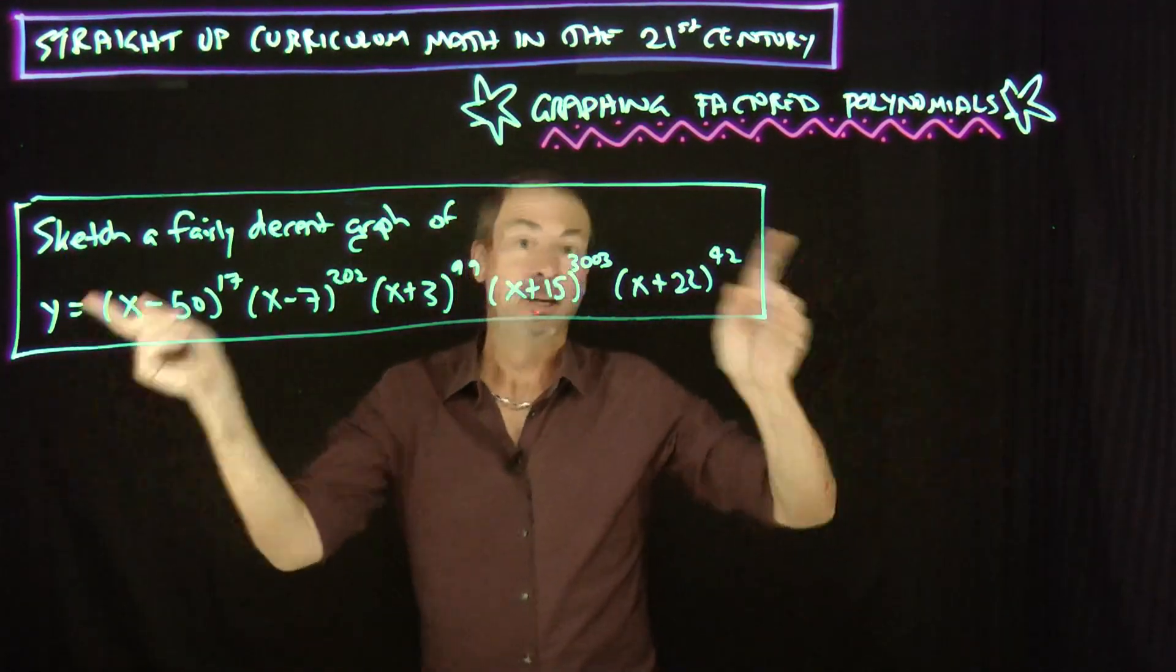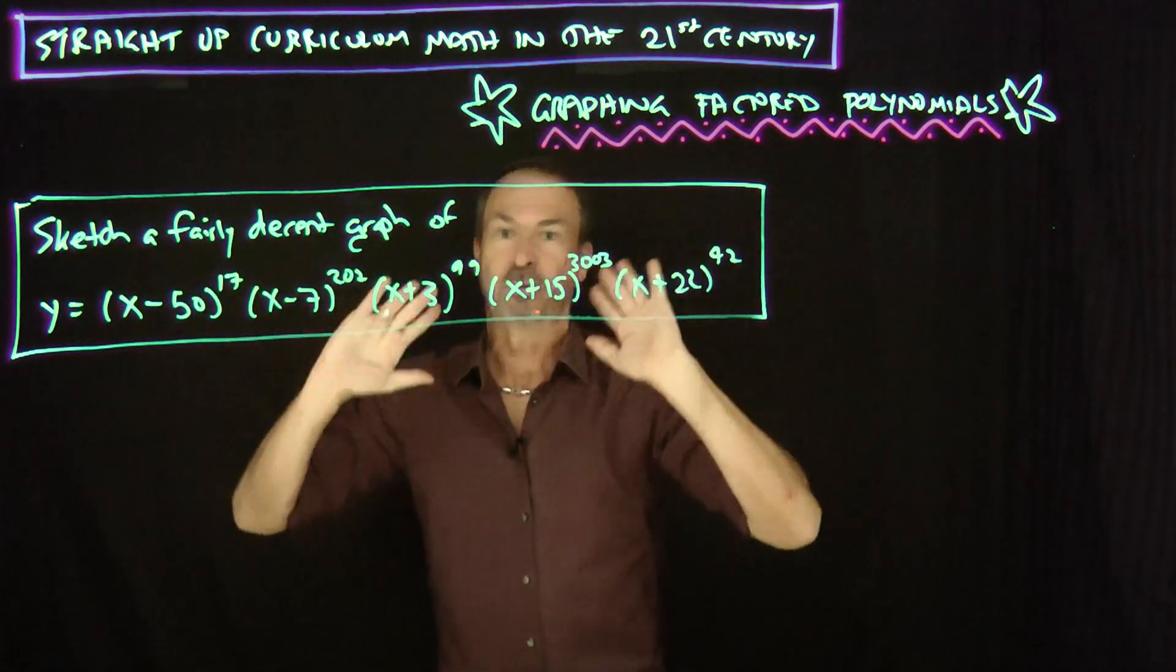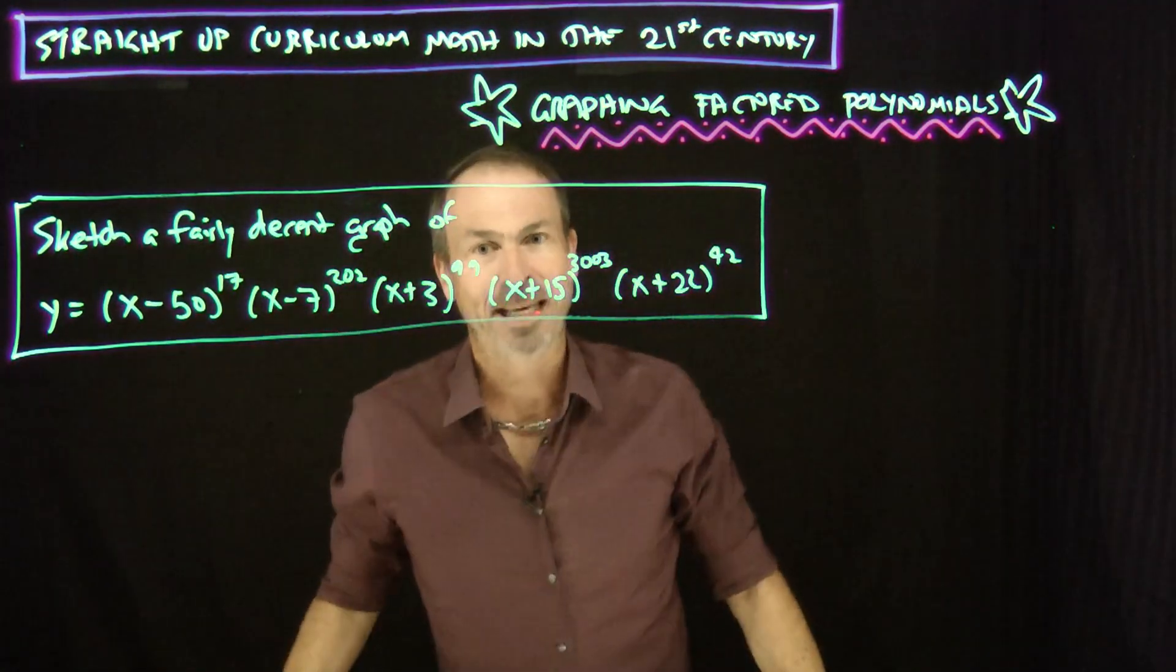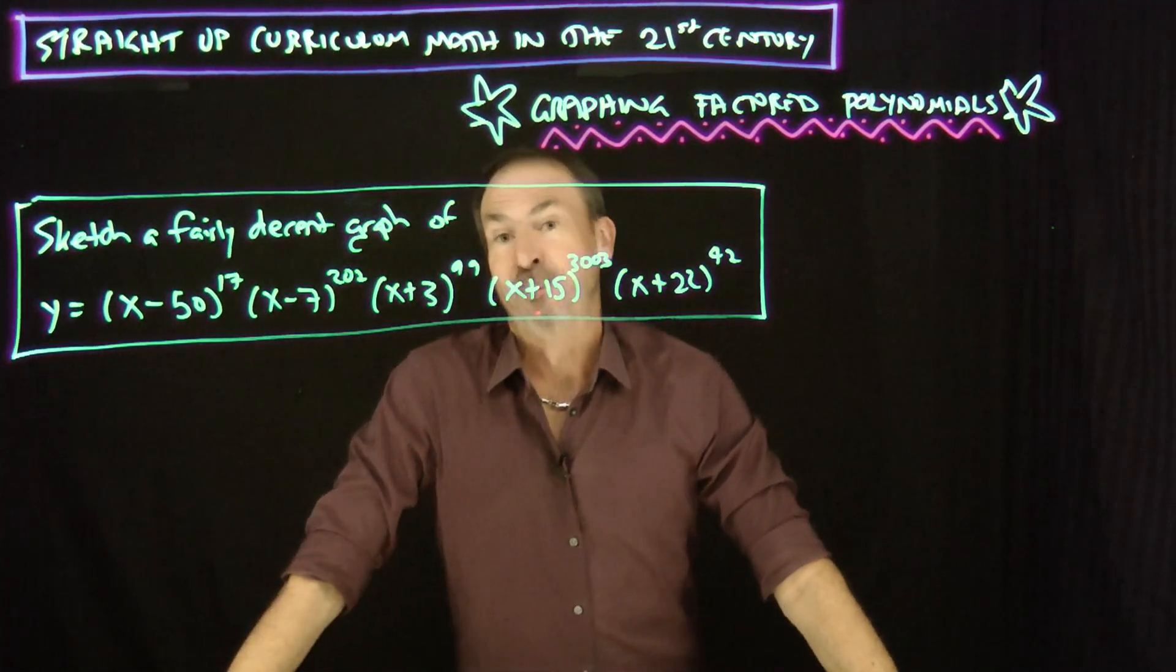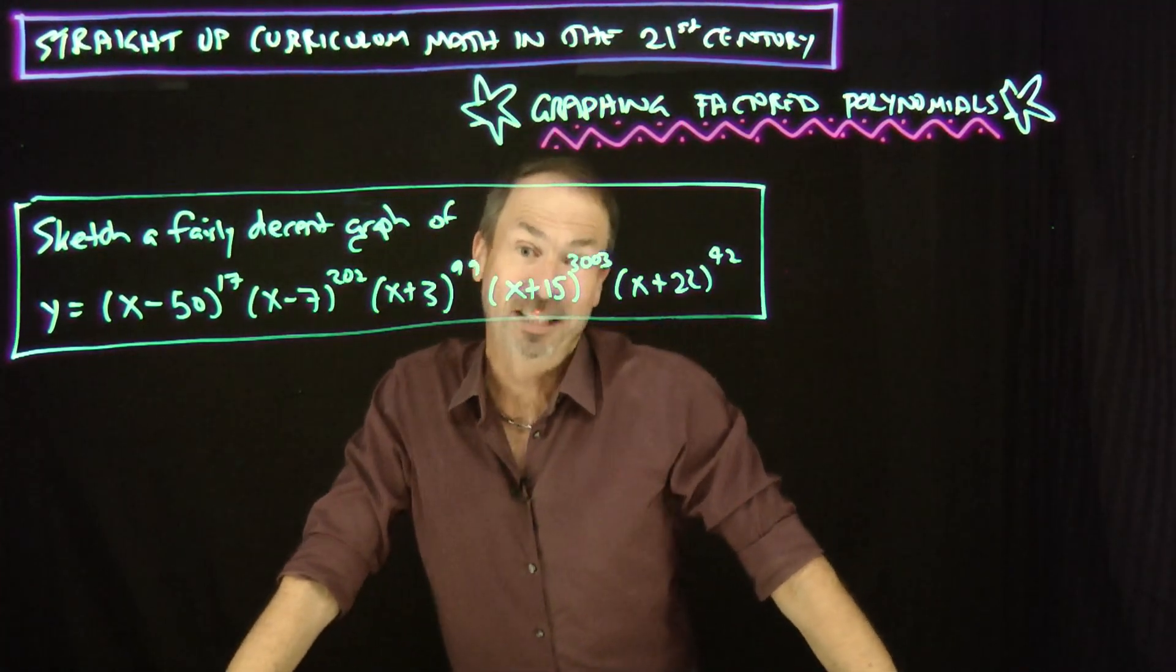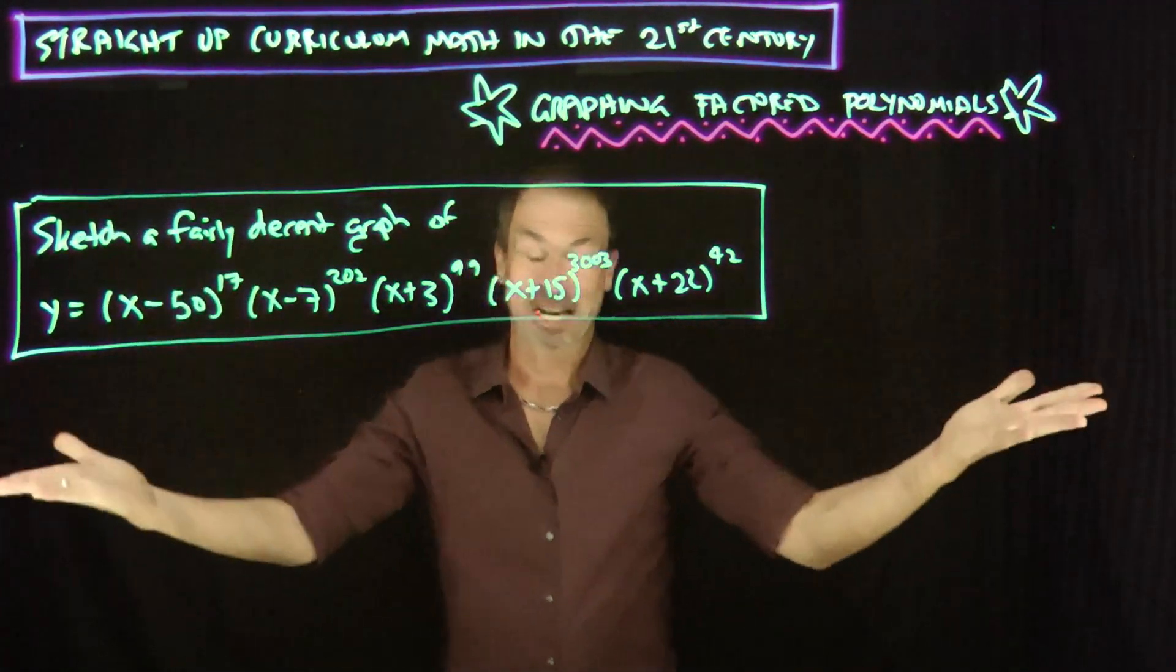Here's a very straight up curriculum topic, but let's make it about the thinking. It's not about getting the answers. Go to software, algebra, get the answers, graph the thing on a calculator. Great. But there's got to be deep thinking here. So, I'm going to treat this as a puzzle to actually inform my thinking for 21st century living. Okay, how's that for a sell?